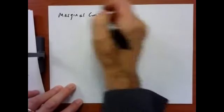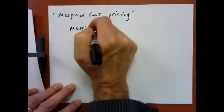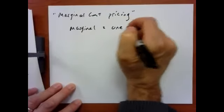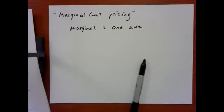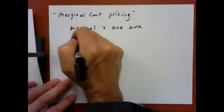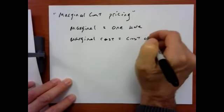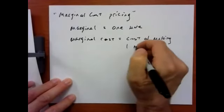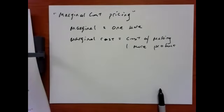A different kind of pricing is called marginal cost pricing. Remember this phrase for next semester in economics: marginal means one more. So marginal cost is the cost of making one more product — whether that's a physical product, a service, or whatever.